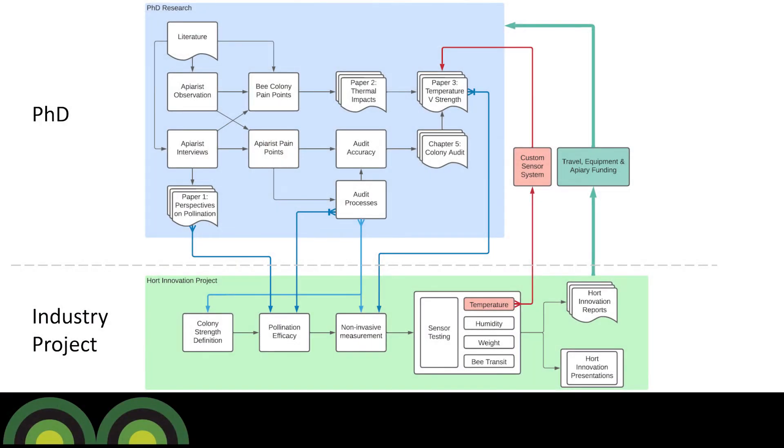One of the things I find particularly interesting is how a PhD and an industry project intersect. The main point is that the industry project provides funds for researchers to buy equipment such as an apiary or sensor systems, and to travel and do interviews and observations. From that we generate a large amount of knowledge which we feed back into the industry via industry reports, conferences, talks, and visits to key personnel to help disseminate the message. Basically, this means I get a better PhD experience and industry gets a much better output from novel research.